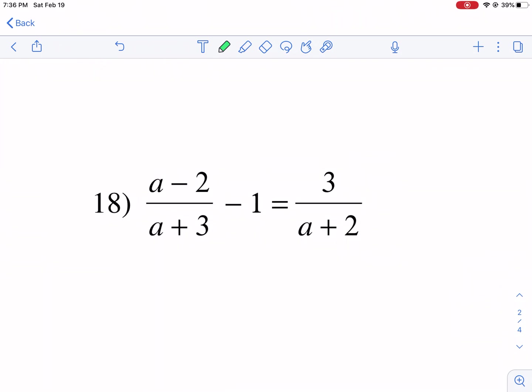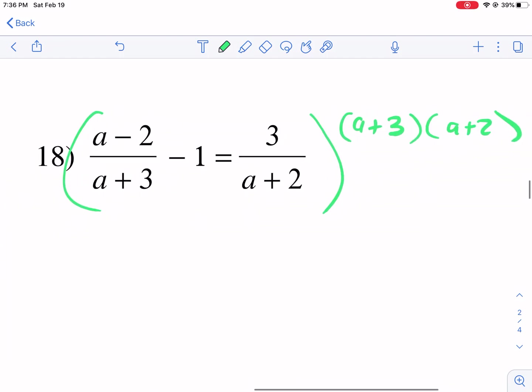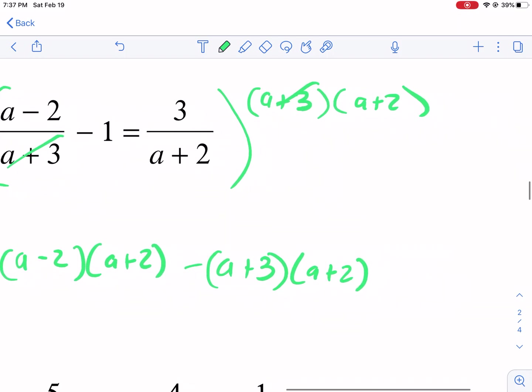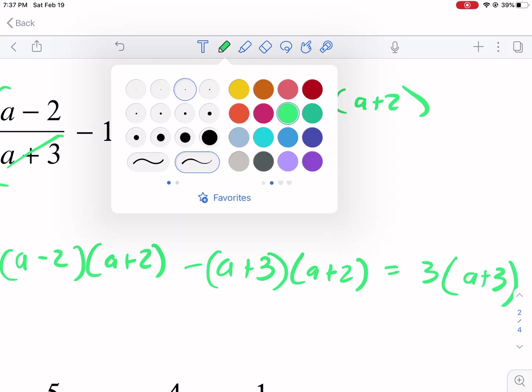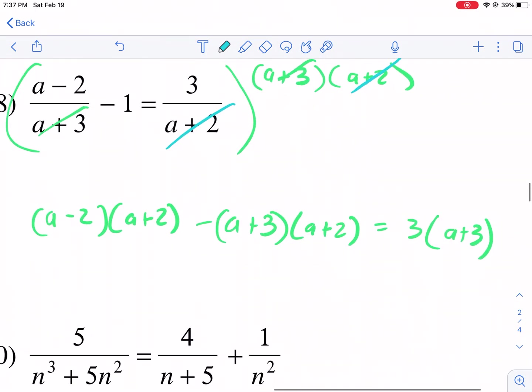Let's move on to 18. This one looks to be a little bit more simple. What we're going to do here is multiply everything by the two terms in the bottom: (a+3) in parentheses and then (a+2). What happens when we do that? We're going to have some canceling. In the top, we're going to have (a-2) and then (a+2) - it canceled, the (a+3) canceled there. Then we have minus the whole thing because nothing cancels and it's multiplied by 1. And then we have 3(a+3) because it canceled with the (a+2).